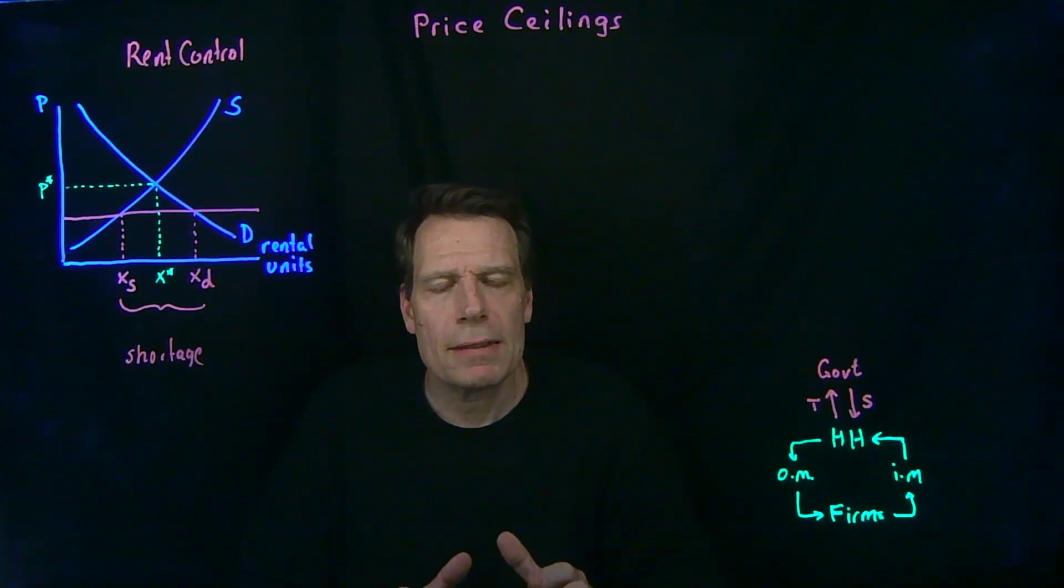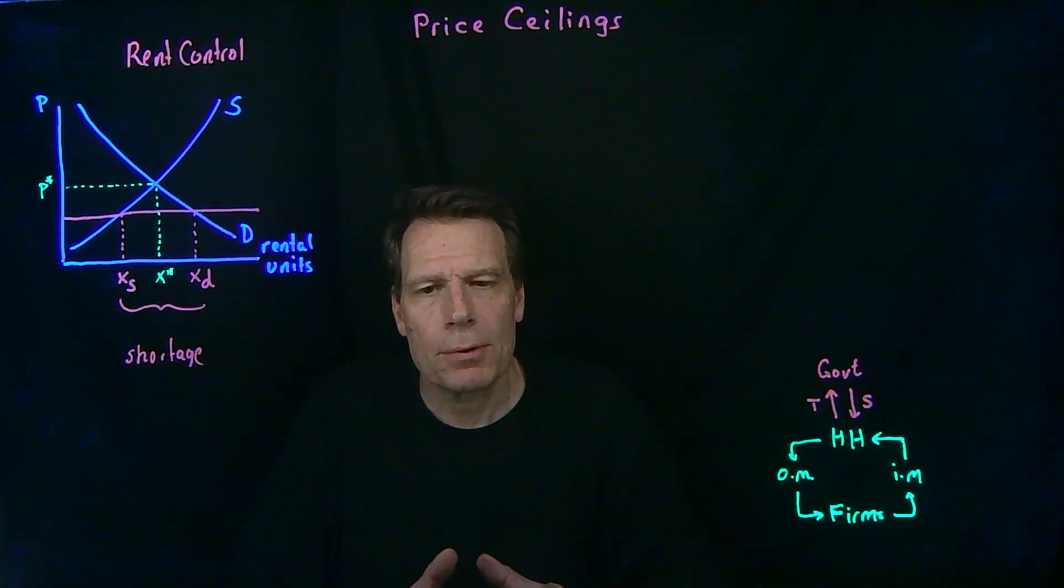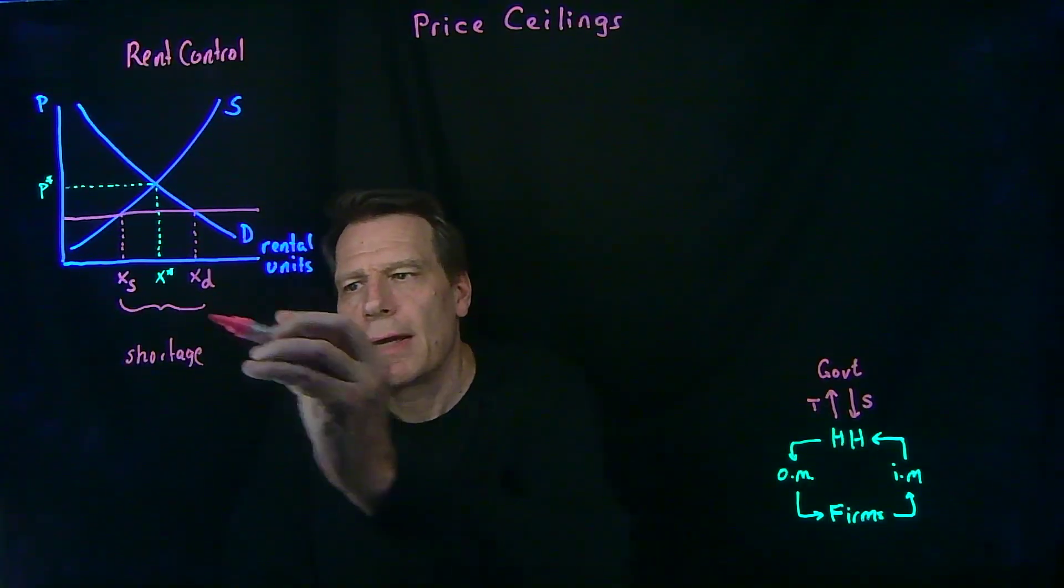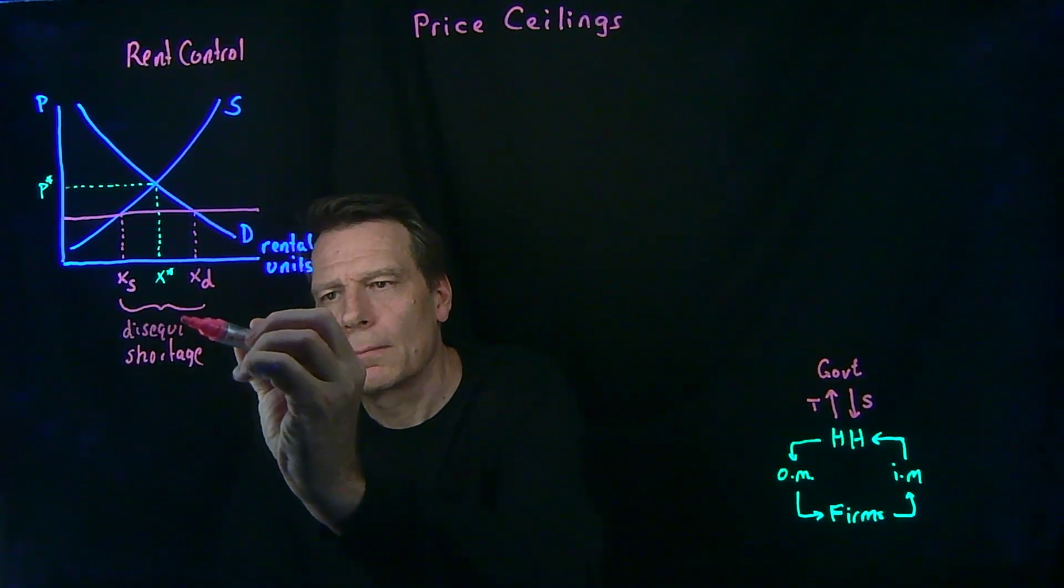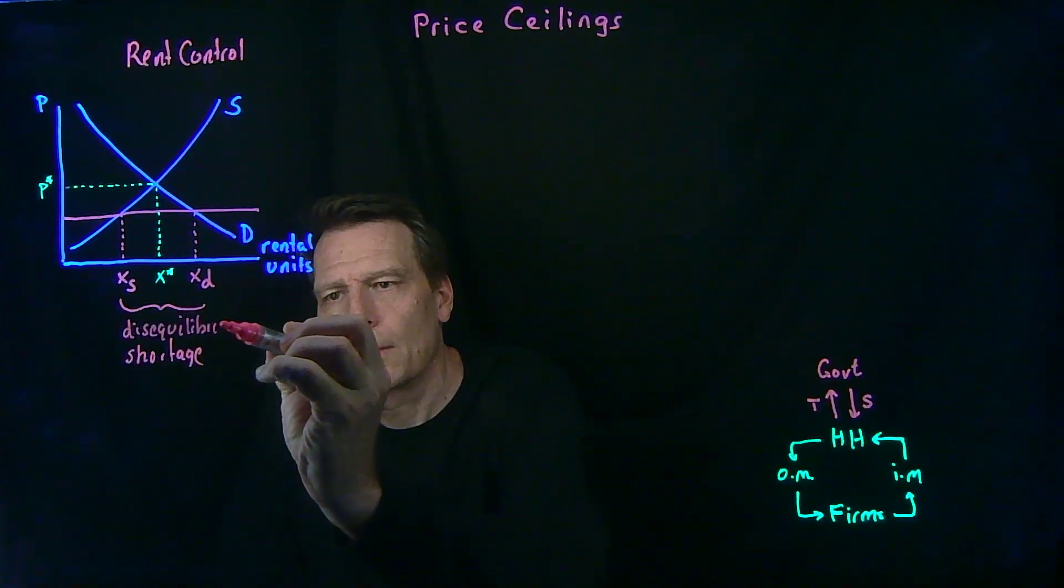But that can't be an equilibrium. It can't be an equilibrium for a bunch of people to want apartments and not be able to get them. Something has to determine who gets which apartments.